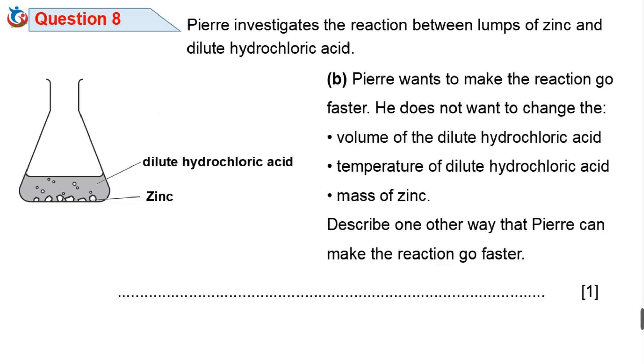Pierre wants to make the reaction go faster. He does not want to change the volume of the hydrochloric acid, the temperature of the dilute hydrochloric acid, nor does he want to change the mass of zinc. Describe one other way that Pierre can make the reaction go faster.